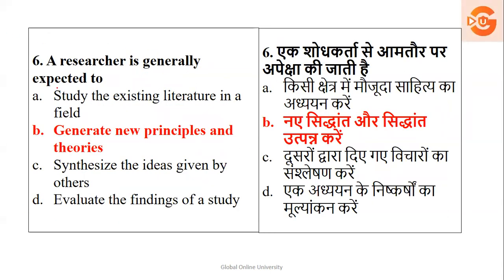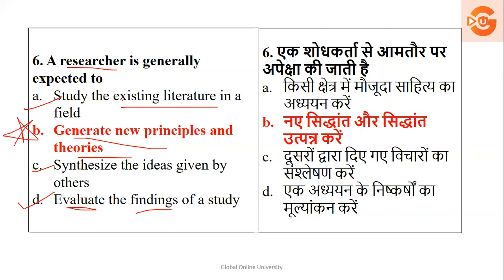A researcher is generally expected to do what? Study the existing literature in the field? Generate new principles or theories? Synthesize ideas given by others? Or evaluate? We read existing literature, analyze and synthesize ideas, and evaluate findings. But combining all of this, the one generic principle is: generate new principles and theories. So the answer is option B — generate new principles and theories.